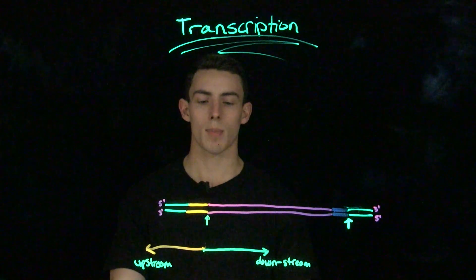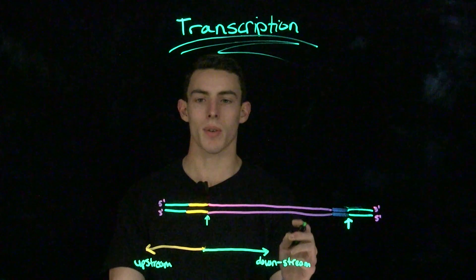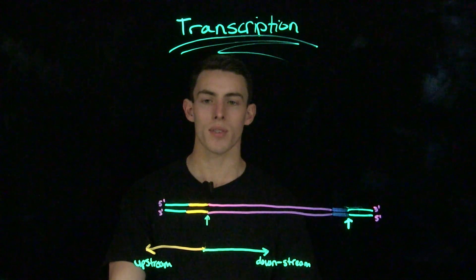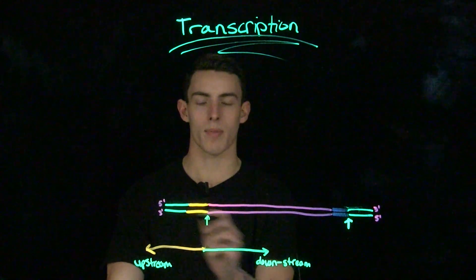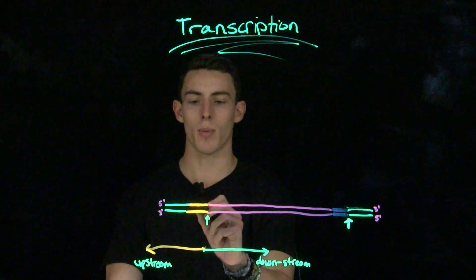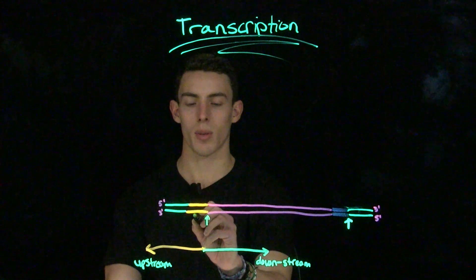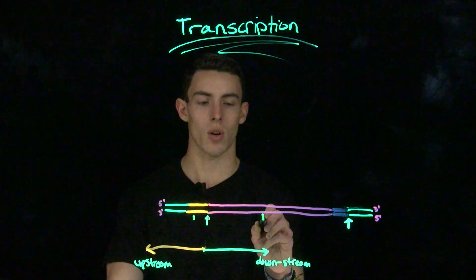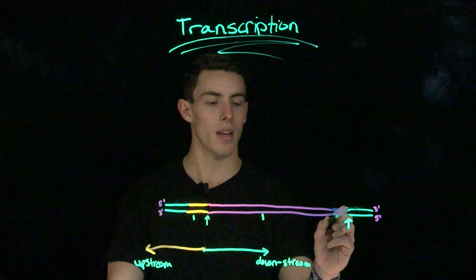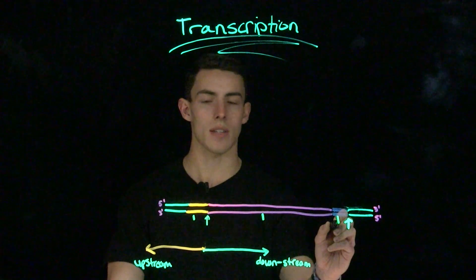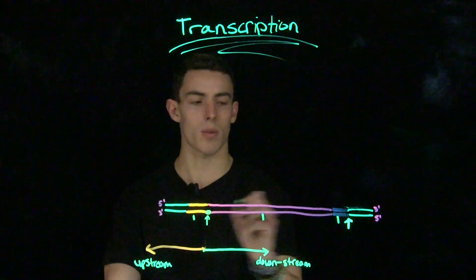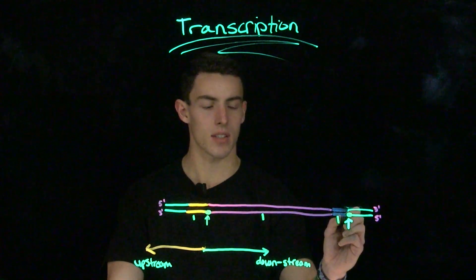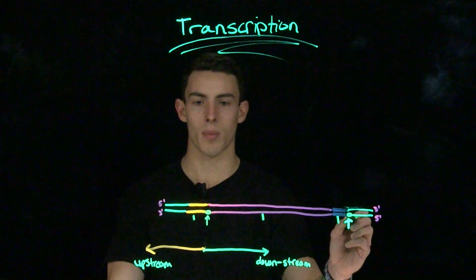When we look at transcription, we like to simplify it down to a basic fundamental unit called the transcription unit. When referencing points in the transcription unit, we compare them by whether they are downstream or upstream from each other. This section is called the promoter, this section is called the RNA-coding region, and this region is called the terminator. This specific sequence is called the start sequence, and this specific sequence is called the termination site.